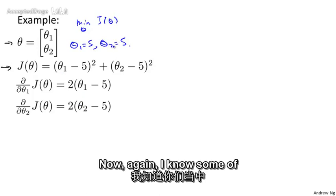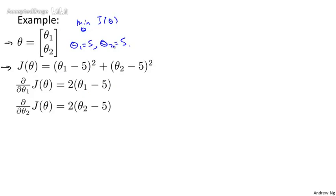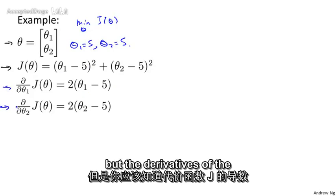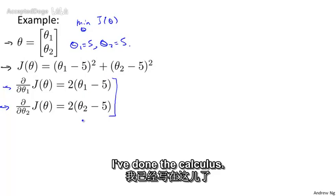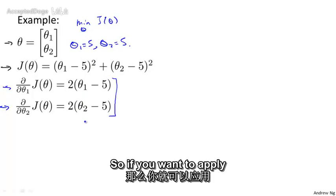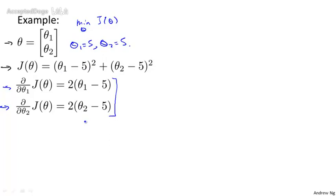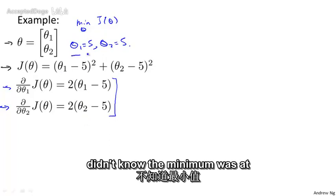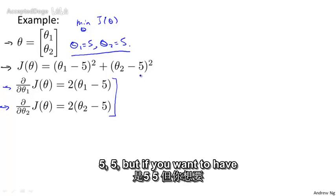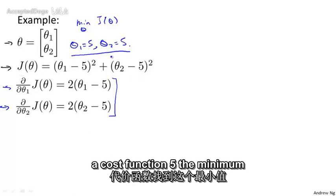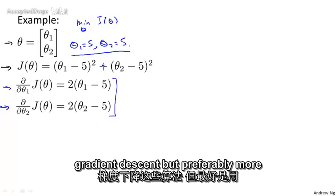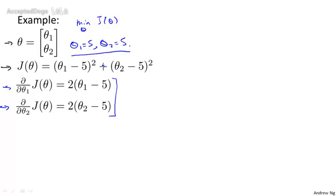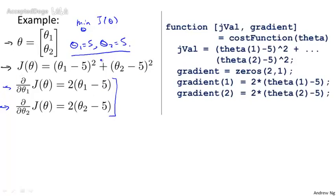The derivatives of the cost function J turn out to be these two expressions — I've done the calculus. So if you want to apply one of the advanced optimization algorithms to minimize this cost function J, and if we didn't know the minimum was at (5, 5) but wanted to find it numerically using something like gradient descent — but preferably more advanced — what you would do is implement an Octave function like this.